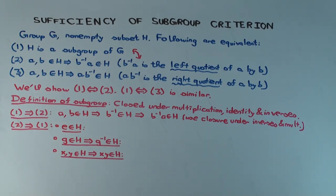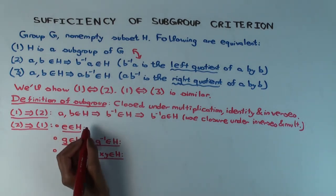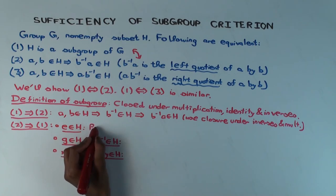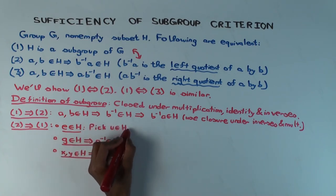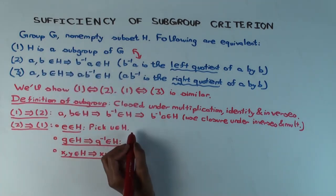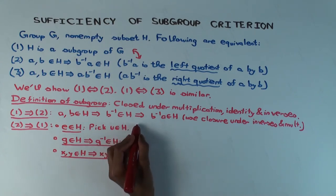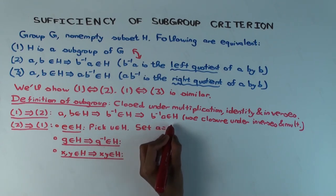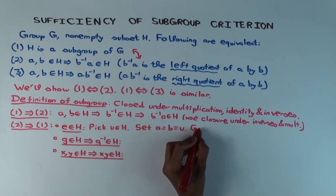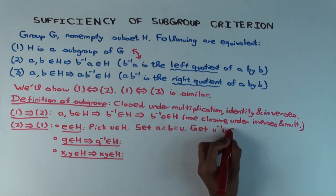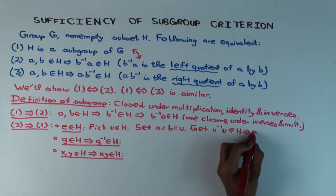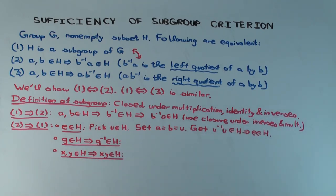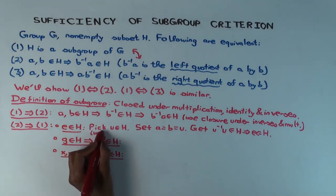To show the identity is in h: take an element u in h (using non-empty), set a equals u and b equals u. Then b inverse times a, which is u inverse times u, equals e, so e is in h. This is crucial — if h were empty we couldn't do this step, and as noted, subgroups must contain the identity.